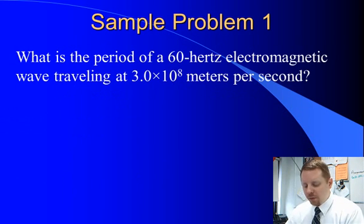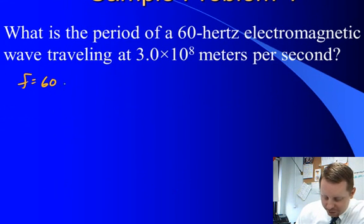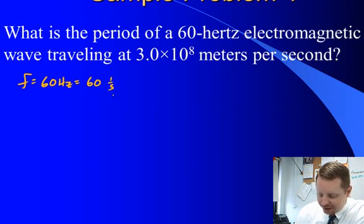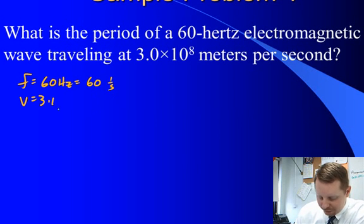So, sample problem 1. What is the period of a 60 hertz electromagnetic wave traveling at 3 times 10 to the 8 meters per second? Well, we know its frequency is 60 hertz or 60 1 over seconds. We know its velocity is 3 times 10 to the 8 meters per second.